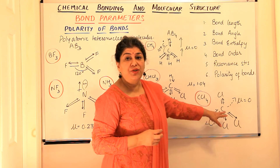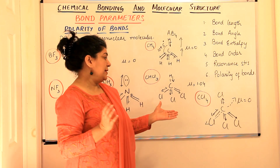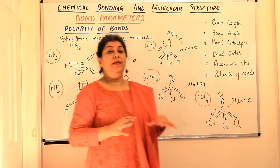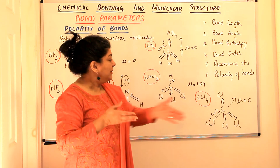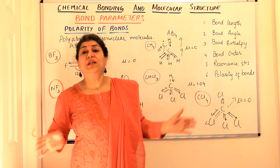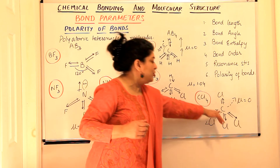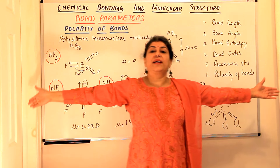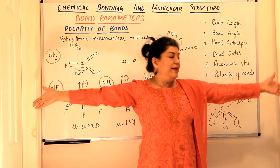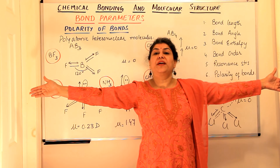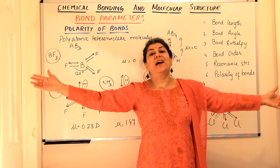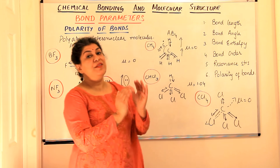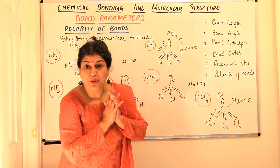In carbon tetrachloride, the opposite applies: all four chlorines are more electronegative, so the bond dipoles move towards the chlorines. But if you take two chlorines on one side and two on the other, their net effect is that they are pulling in opposite directions, again cancelling each other out. Hence, the net dipole moment of CCl4 is also zero.